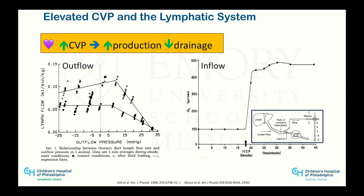When we increase the afterload on drainage in patients, lymph flow just completely stops. At about 10 to 15 mmHg, all your right-sided heart failure patients will have a huge increase in production of lymph fluid from the liver.